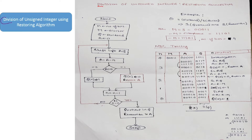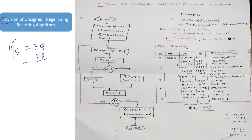Looking at the algorithm, we start with: N is the number of bits, M is the divisor, Q is the dividend, and A is the accumulator which has been assigned the value 0. These are the four things you need first. For example, here we have 11 divided by 3, so dividing 11 by 3 gives 3 as the quotient and 2 as the remainder.